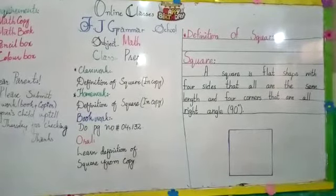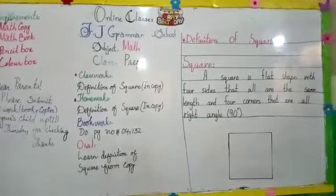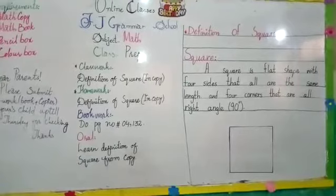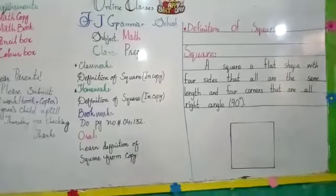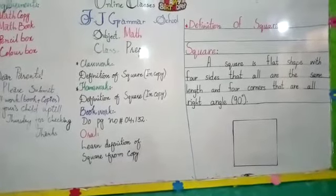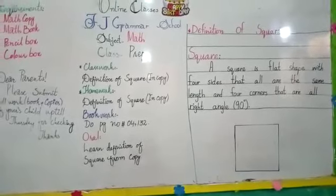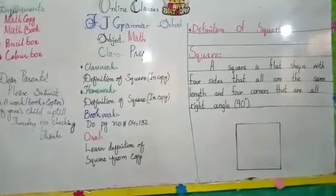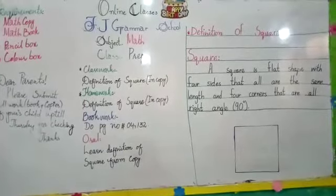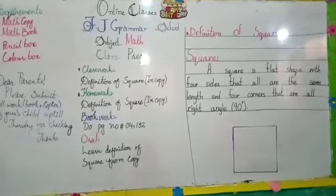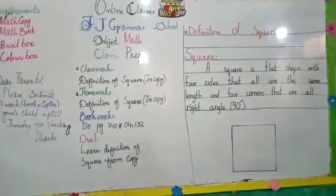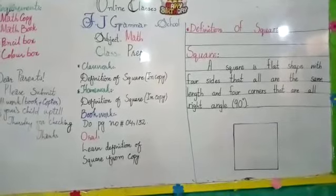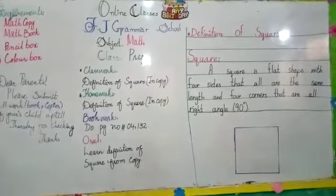A-R-E, are, all. Then A-N-D, and. Same, S-A-M-E. Length, L-E-N-G-T-H. Then A-N-D. F-O-U-R, four. Corners, C-O-R-N-E-R-S. T-H-A-T, that. A-R-E, are. A-L-L, all. Then R-I-G-H-T. A-N-G-L-E, angle.